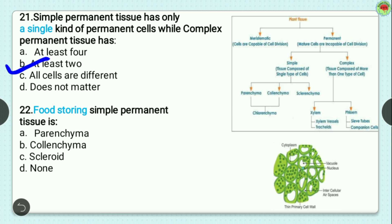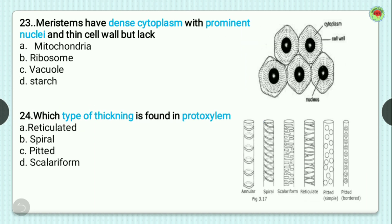Question number 22: food storing simple permanent tissue is? This is a very commonly asked question. Options are parenchyma, collenchyma, scleroid, and none. Parenchyma is the tissue which stores food. So the correct option is option A, parenchyma.